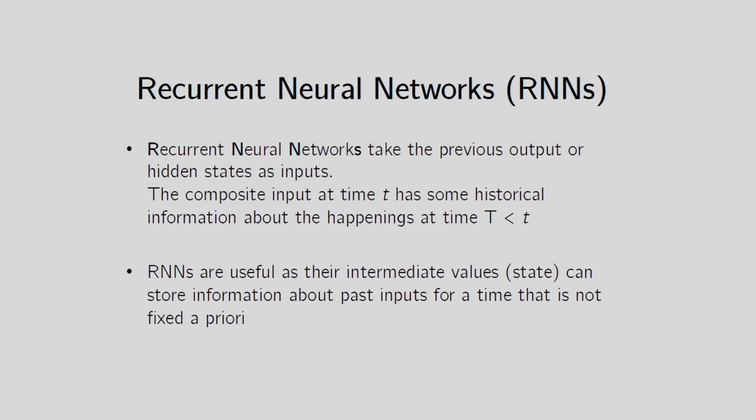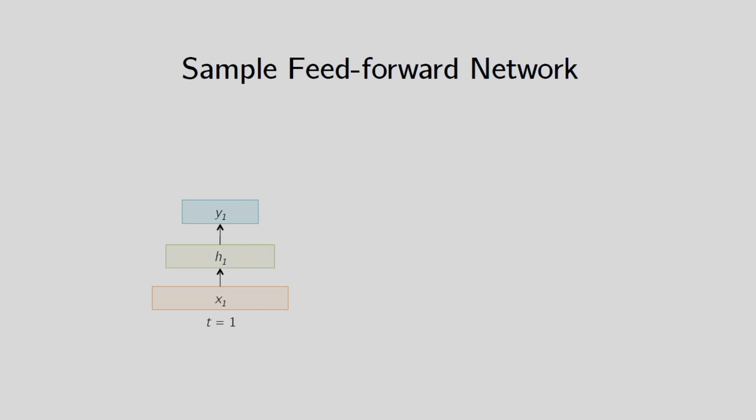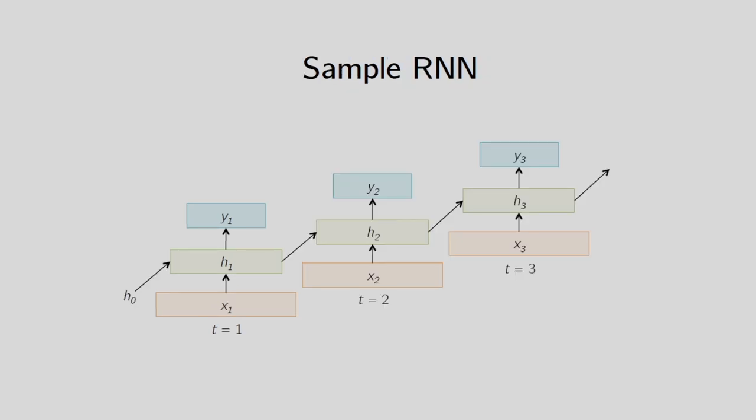Recurrent neural networks take the previous output or hidden state as input. The composite input at time t has historical information about happenings at times less than t — that means we are considering temporal information in the RNN because past information is also considered. That is why RNNs can be employed for temporal pattern recognition. In a simple feedforward network at t=1, input is x1, we have a hidden layer, and the output is y1 — no past information is considered. But in the recurrent neural network, past information is considered.